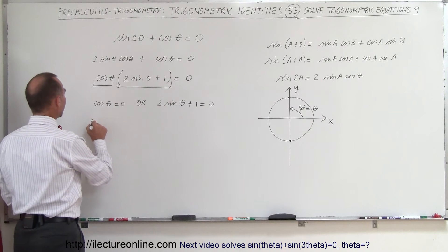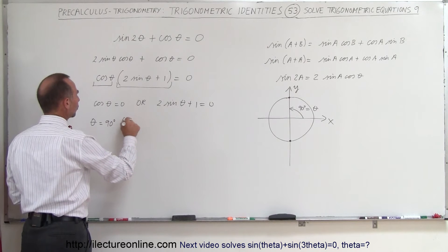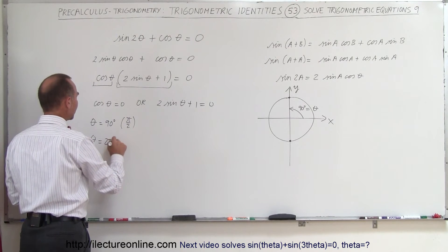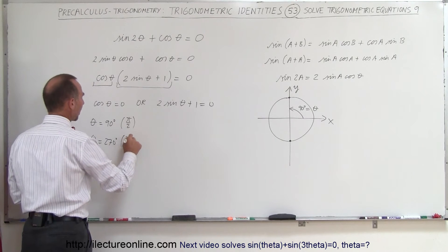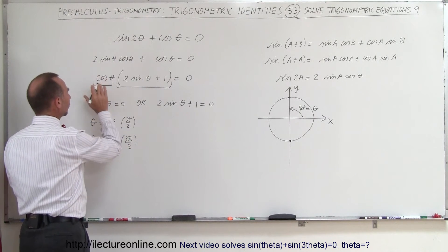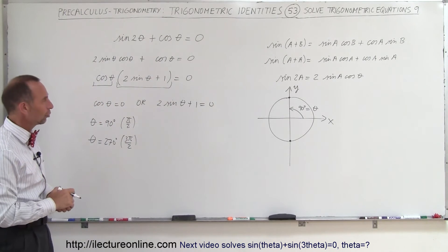So there's two values for theta when the cosine of theta can be equal to 0. So therefore, we can say that when theta is equal to 90 degrees, which is basically pi over 2, or when theta is equal to 270 degrees, which is 3 pi over 2. So for those two values for theta, the cosine of theta will be equal to 0. And 0 times anything else, you'll get 0. So that's two of the solutions.